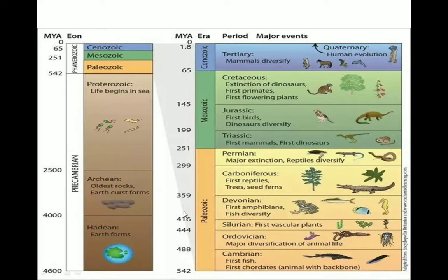Earth's 4.6 billion year history is divided into four eons: the Hadean, Archean, Proterozoic, and Phanerozoic. The Hadean, Archean, and Proterozoic eons together are called the Precambrian time. The names of the eras in the Phanerozoic eon are the Cenozoic, Mesozoic, and Paleozoic.